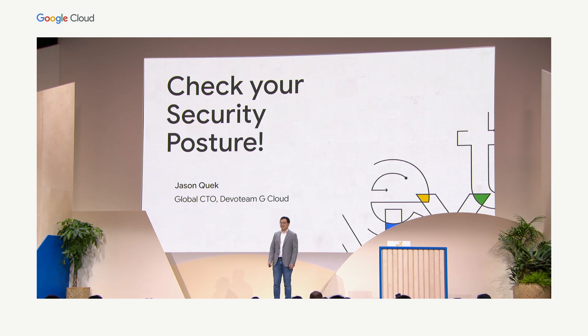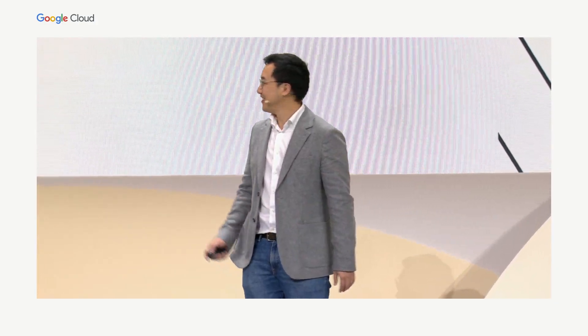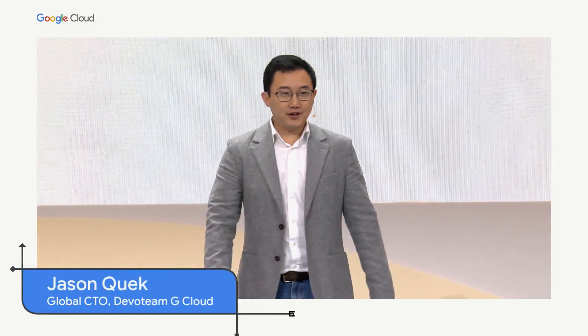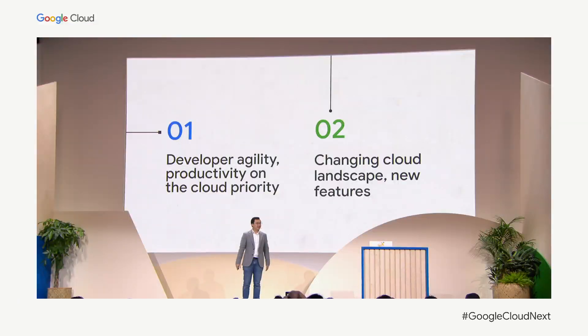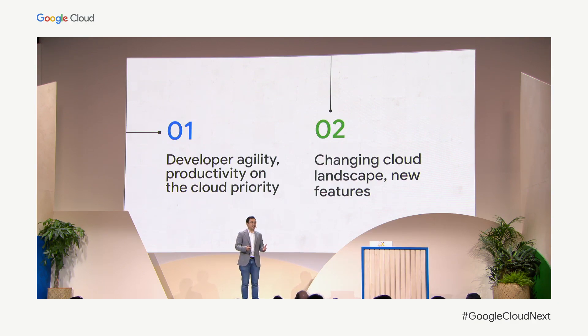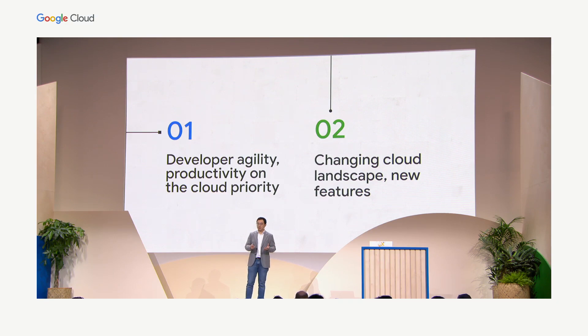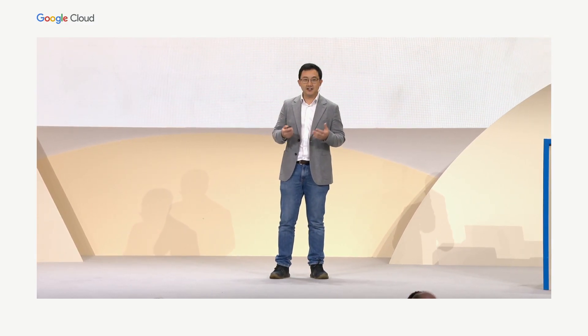Hi everyone, thanks for joining my session today. I'm going to talk about a very important topic: checking your security posture in Google Cloud. First, I'd like to give a bit of background — where did we come from, and why am I on this stage talking about this? When we first moved to Google Cloud, we decided we were going pure cloud native. The number one priority was developer agility — how do we build products and applications on the cloud as fast and as cleanly as possible? We also had to combat the continuously changing cloud landscape with new features and releases, like you've seen at Cloud Next, and understand what to use and what not to use.